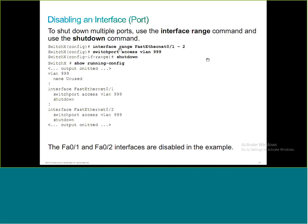As shown in this example, using 'interface range 1-2', they assign the ports to VLAN 999 and shut them down. VLAN 999 will not be utilized anywhere. I would also recommend adding 'switchport mode access' and 'switchport nonegotiate' before assigning the VLAN and shutting down, so that even if a port accidentally gets enabled, it will remain in VLAN 999 with no trunking negotiation option.